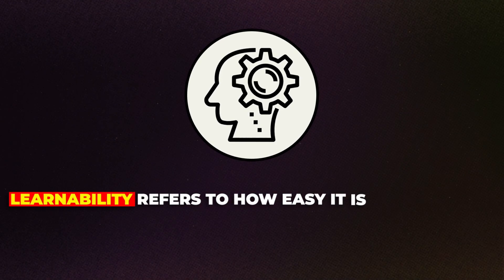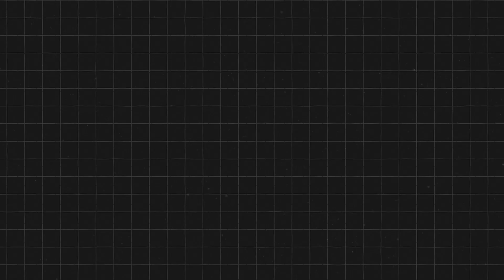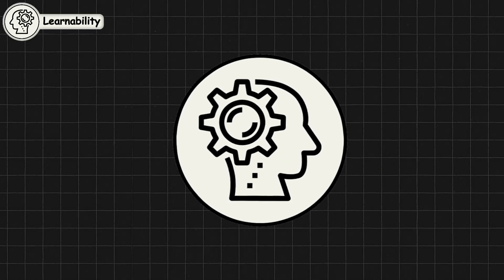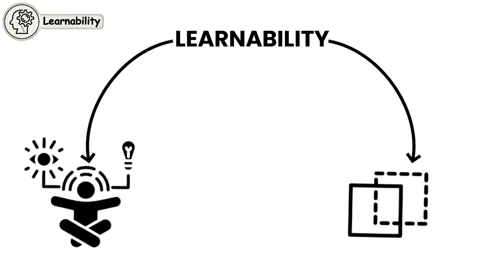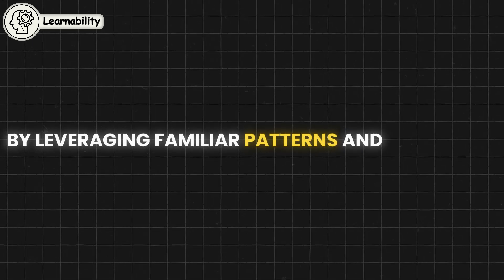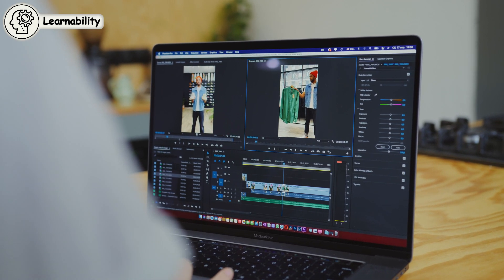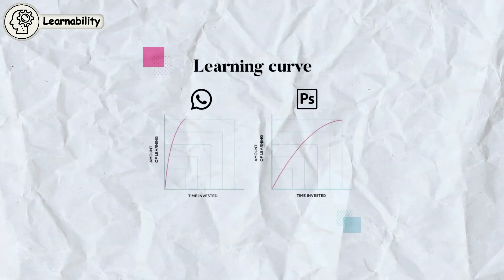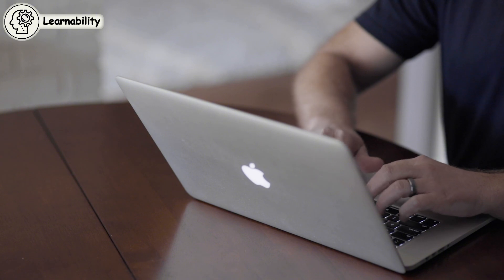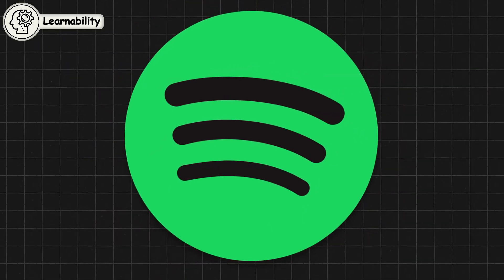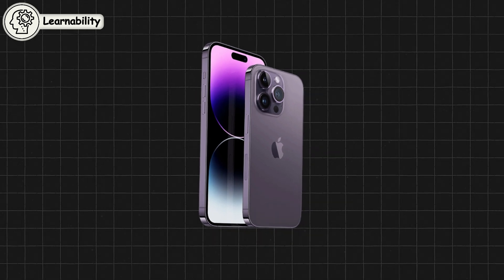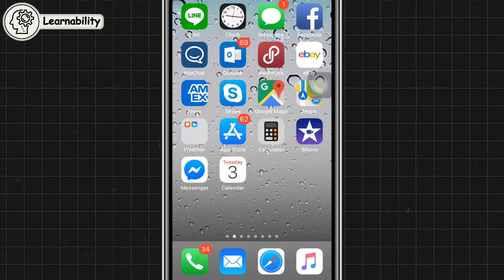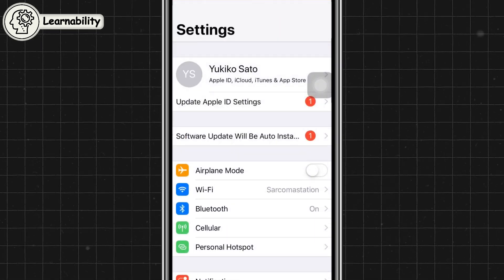Learnability refers to how easy it is for users to grasp and master a product. A highly learnable design allows users to quickly understand how to navigate and interact with the product, requiring minimal instruction or prior knowledge. Learnability is closely tied to familiarity and intuitiveness — by leveraging familiar patterns and clear cues, designers can create interfaces that users feel comfortable with right away. The faster users can learn how to use a product, the more likely they are to continue using it. Spotify's user-friendly interface makes it easy for new users to jump in and start streaming music immediately, and Apple's iPhone design is similarly learnable, with intuitive gestures and a simple home screen that first-time users can navigate without needing a manual.